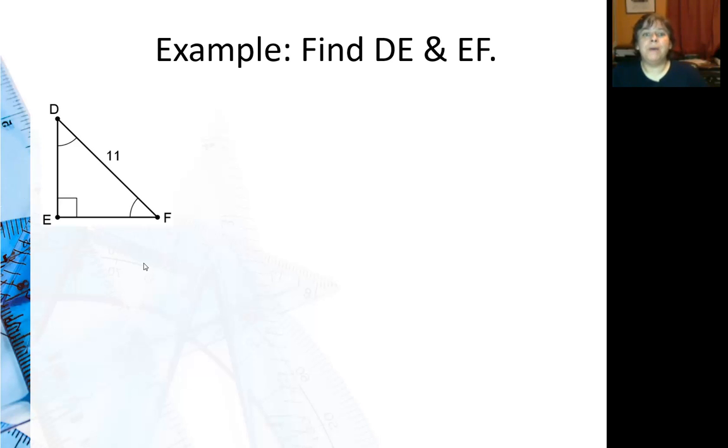Here in this example we're going to find DE and EF. Oh by the way, on that previous example I accidentally had AB in your notes, so it's fixed on my slide. So in this example now I gave you the hypotenuse of an isosceles right triangle and I want to find the legs.